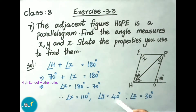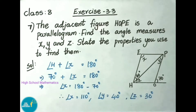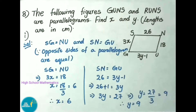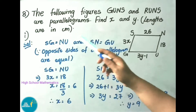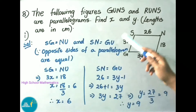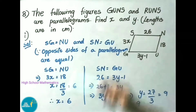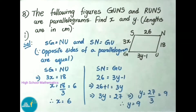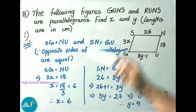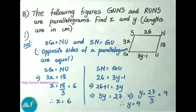So angle y equals 40 degrees and angle z equals 30 degrees. Now question number 8: the following figures GUNS and RUNS are parallelograms. Find x and y. Lengths are given in centimeters.